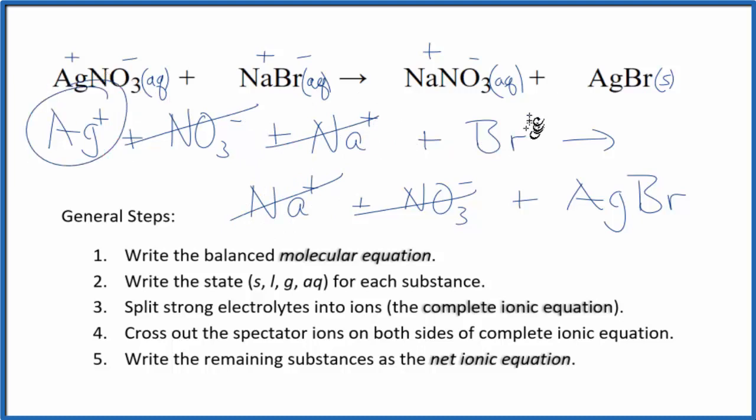What's left is the net ionic equation. I'll clean this up and write the states in, and we'll have the net ionic equation for AgNO3 plus NaBr.